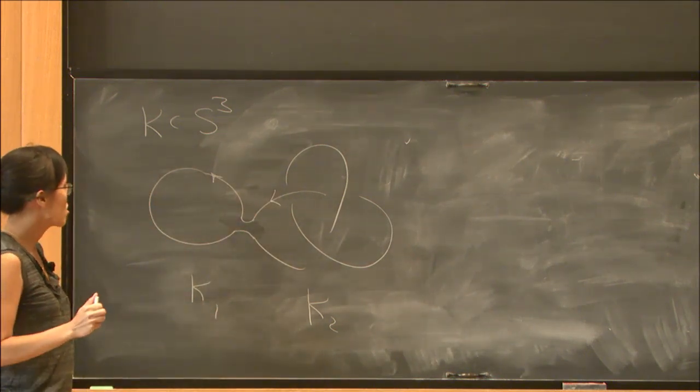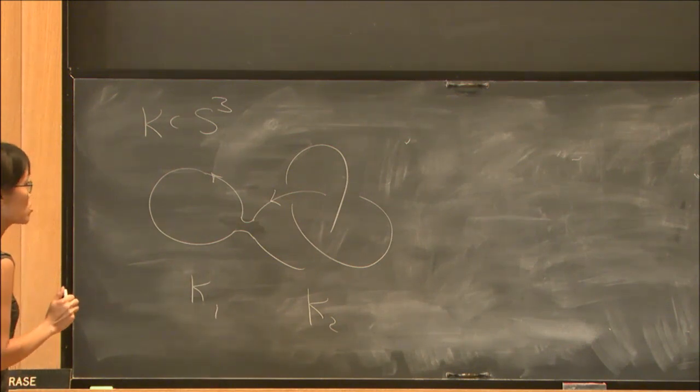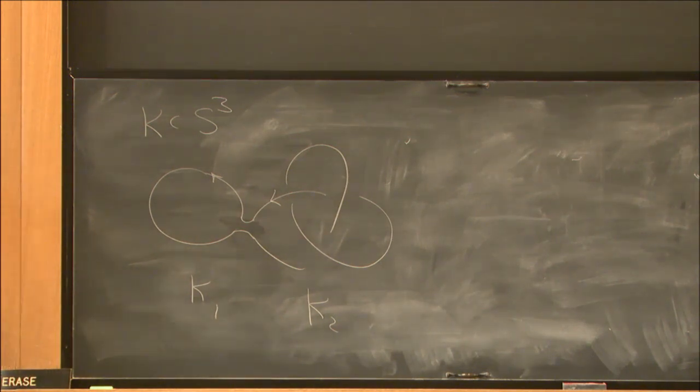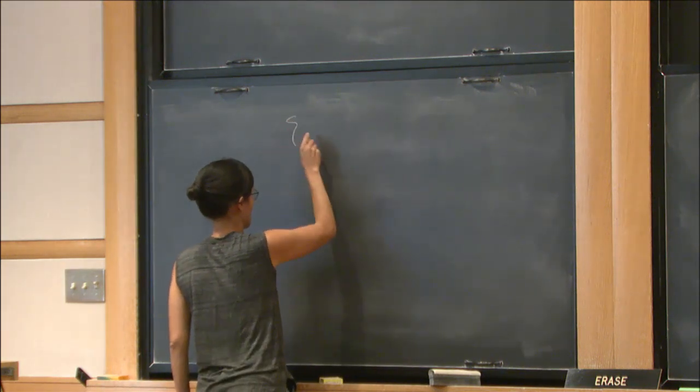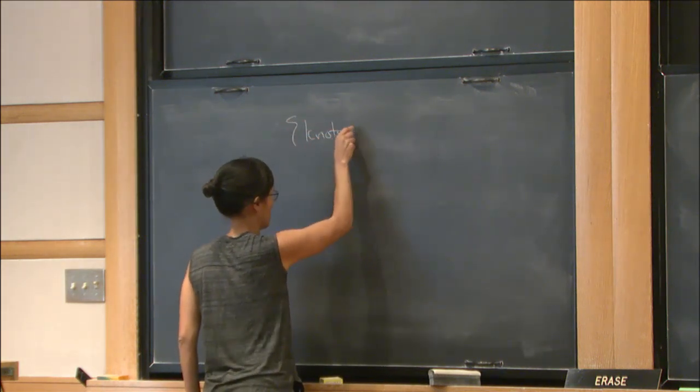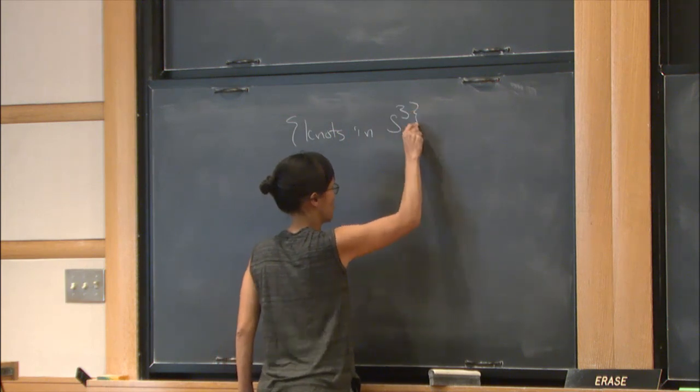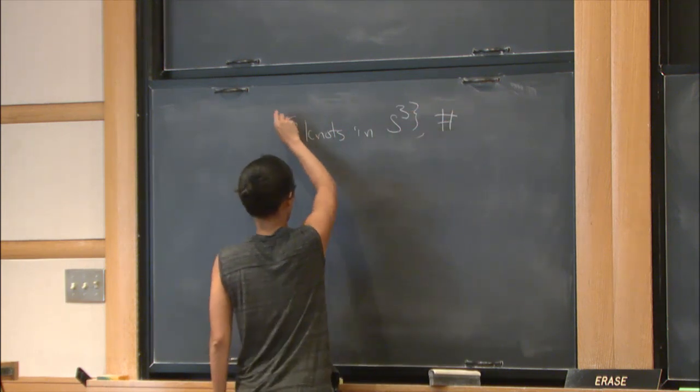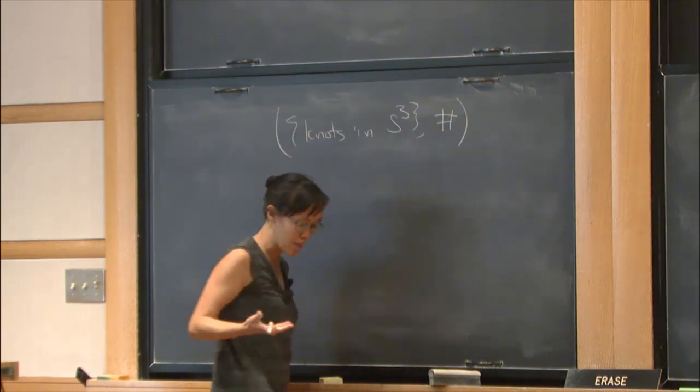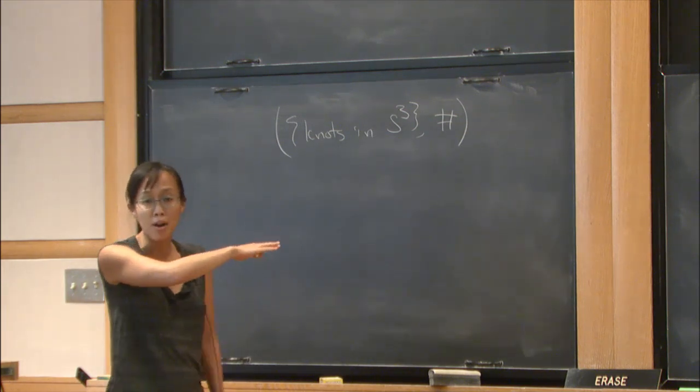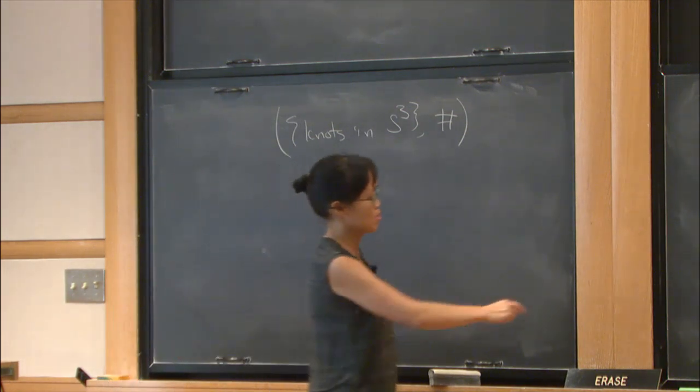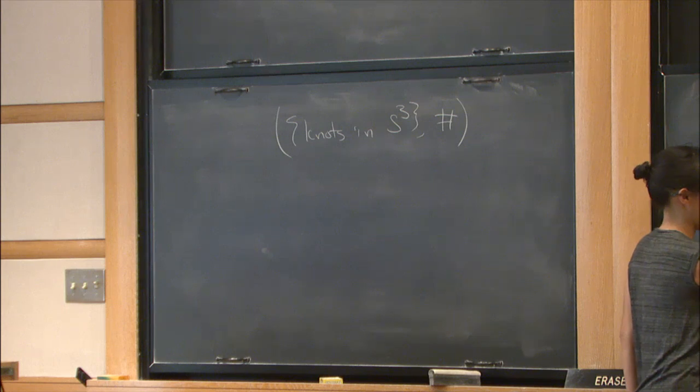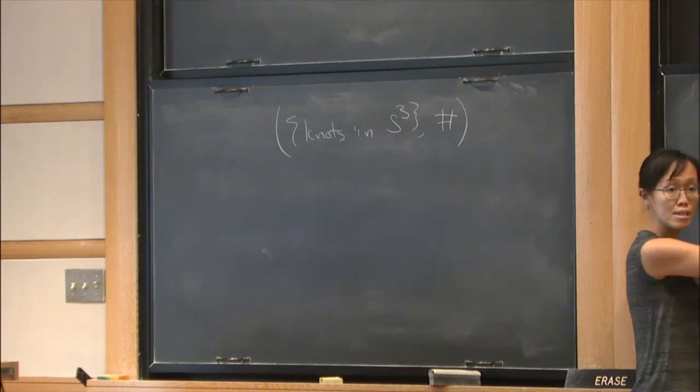So if you consider the set of knots in S³ under the operation of connected sum—and we always think of knots up to isotopy—well, this is a monoid. For example, we didn't change the isotopic class of this knot moving to the connected sum.